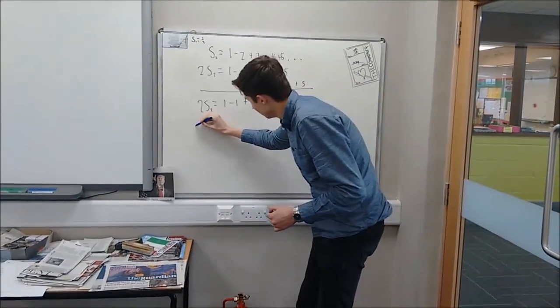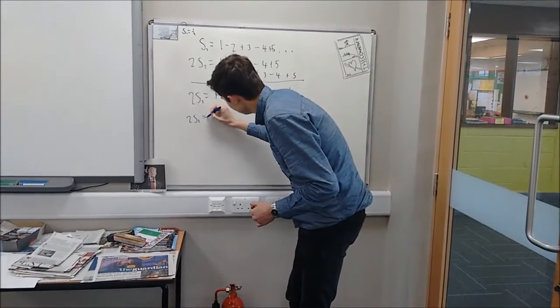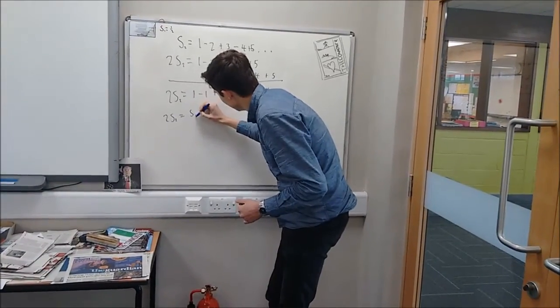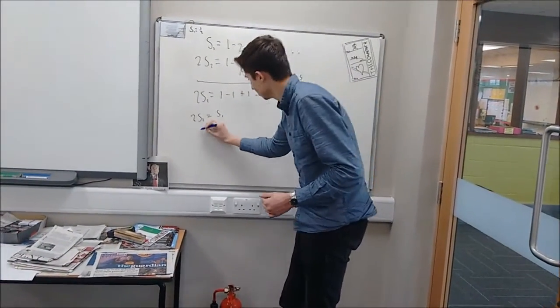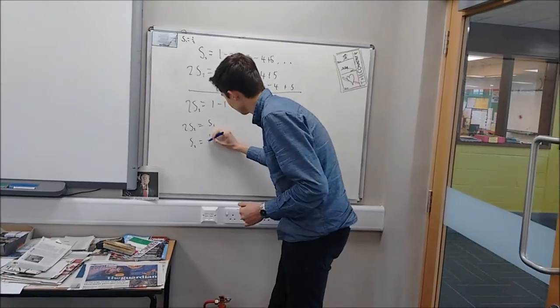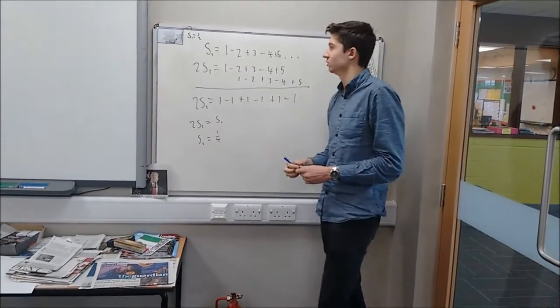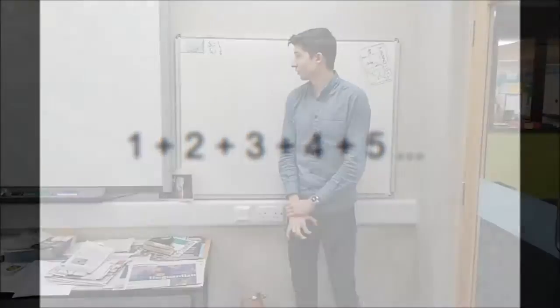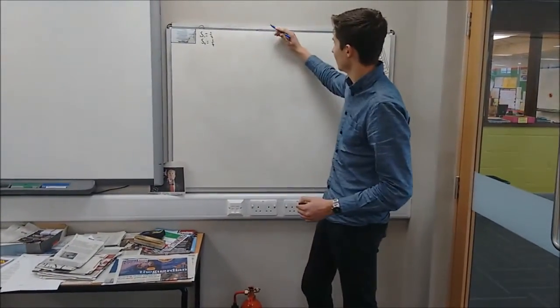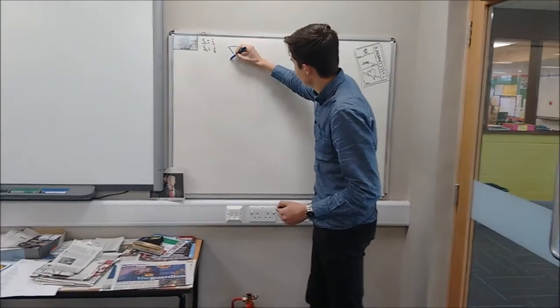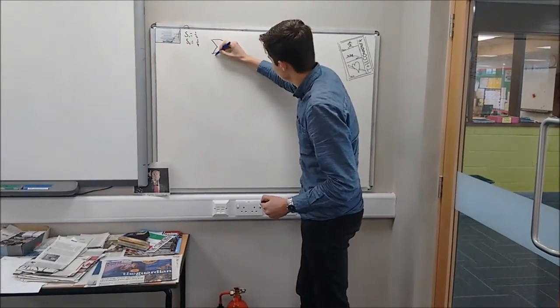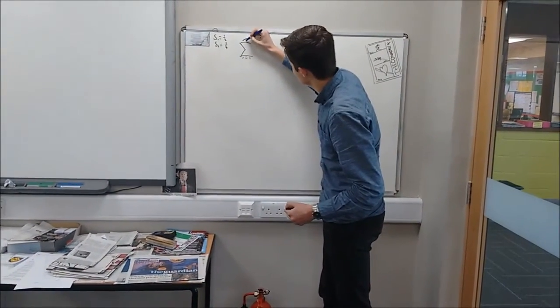And so we can figure out that if 2S2 equals S1, then S2 equals a quarter, which is the next equation. So when we put these 2 answers here, we can start working out the big money here: the sum of all natural numbers from 1 to infinity.